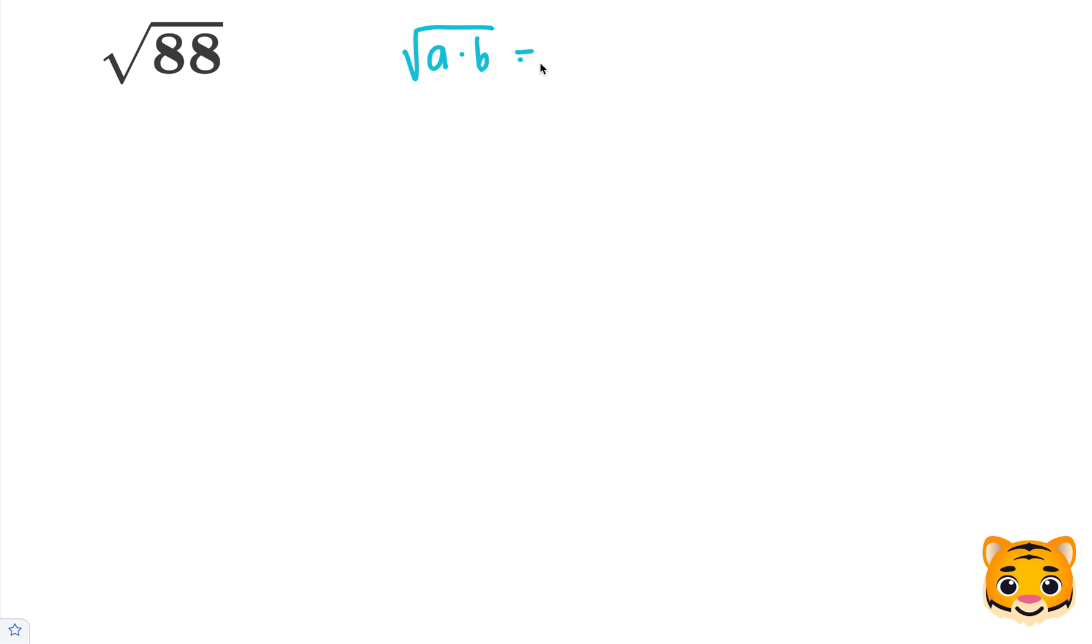The square root of a times b equals the square root of a times the square root of b. This means that if we have two numbers multiplied inside a square root, we can rewrite them with their own square roots multiplied together.